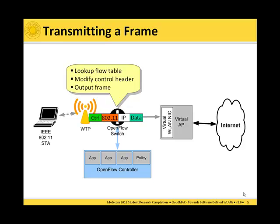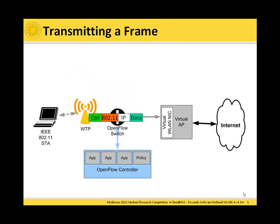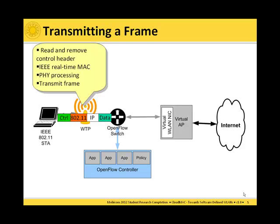For example, the transmission power could be rewritten at the OpenFlow switch. Then the frame is sent to the wireless termination point, which reads and removes the control header, performs the normal real-time MAC processing and physical layer processing, and the frame is eventually transmitted to the station.